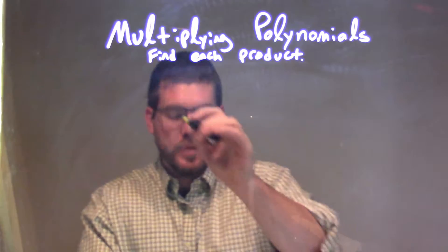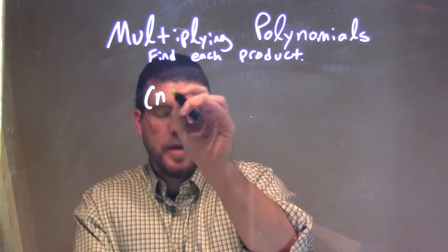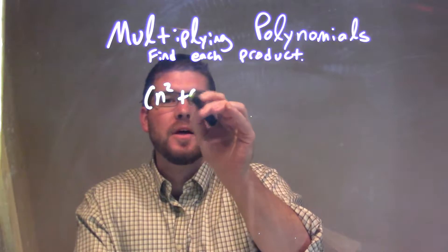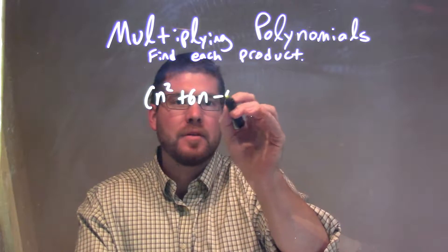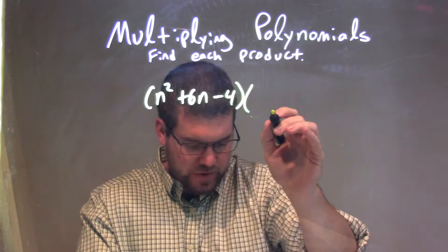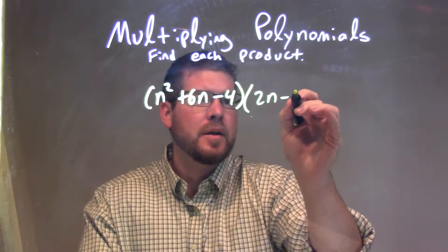So if I was given this problem here: n squared plus 6n minus 4, times my second parenthesis, 2n minus 4.